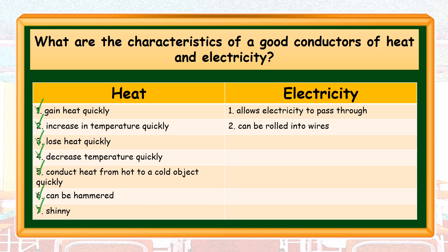Some good conductors of heat are shiny in appearance. We have already enumerated the characteristics of good conductors of heat. Now let's enumerate the characteristics of good conductors of electricity. Good conductors allow electricity to pass through, and they can be rolled into wires.